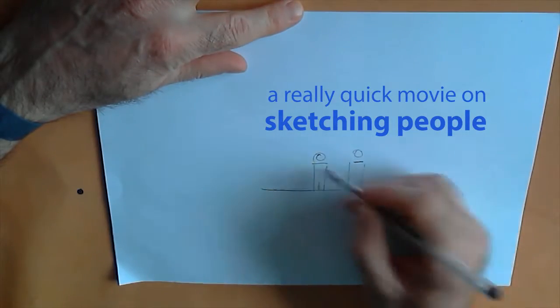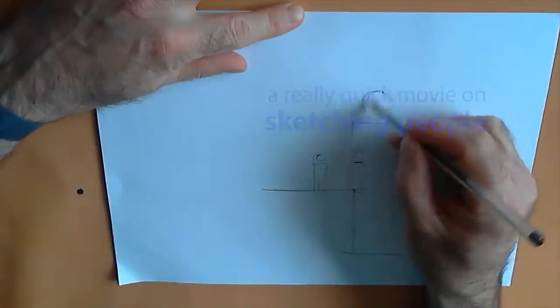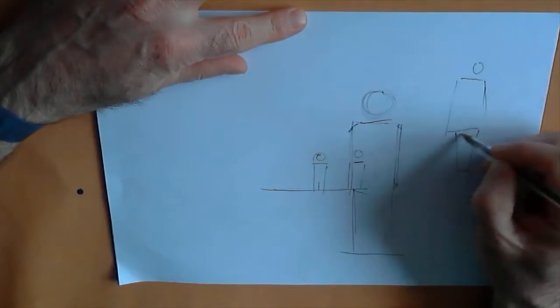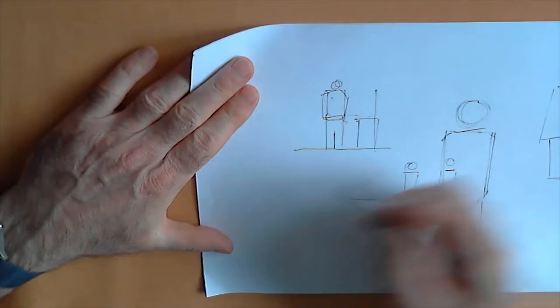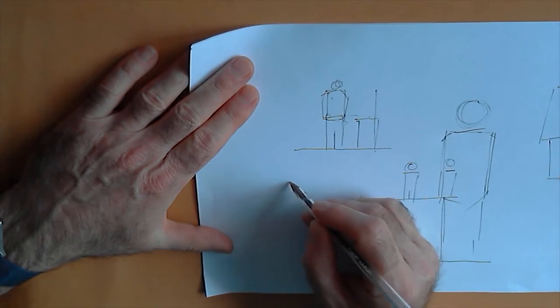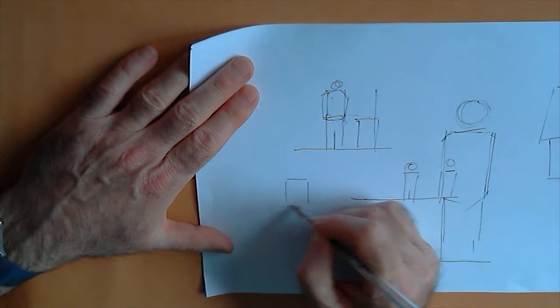Hi there folks, a quick movie here on sketching people. We're going to look at proportions, how you might just do it, keeping it as simple as possible. Two squares works pretty well: square at the base, square above that, and then drop a circle on top of that and you've got yourself a head.